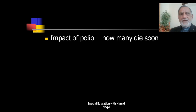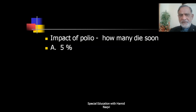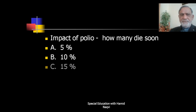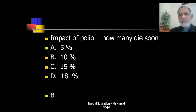First question: What is the impact of polio — how many die soon? Options: 5% of the affected, 10% of the affected, 15% of the affected, or 18% of the affected. The correct answer is B — 10% of the affected die very soon.